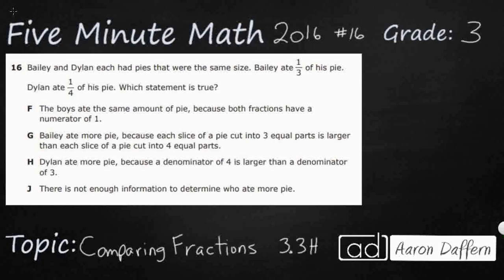So Bailey and Dylan each ate pies that were the same size. Bailey ate one-third of his pie, Dylan ate one-fourth. Which statement is true? Now it's important for us to know that these pies do have to be the same size because we're going to compare these fractions. We're going to be comparing one-third and one-fourth.